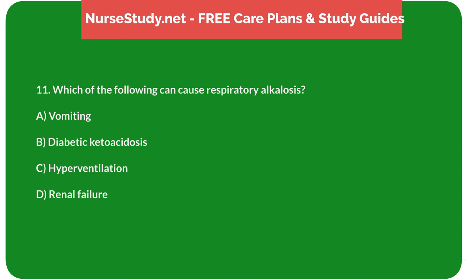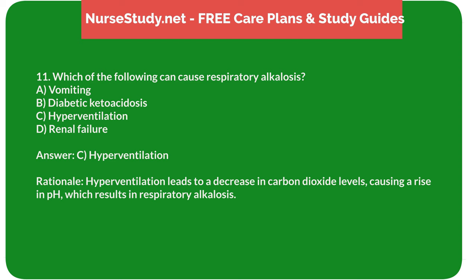Question 11: Which of the following can cause respiratory alkalosis? A. Vomiting. B. Diabetic ketoacidosis. C. Hyperventilation. D. Renal failure. Answer: C. Hyperventilation. Rationale: Hyperventilation leads to a decrease in carbon dioxide levels, causing a rise in pH, which results in respiratory alkalosis.